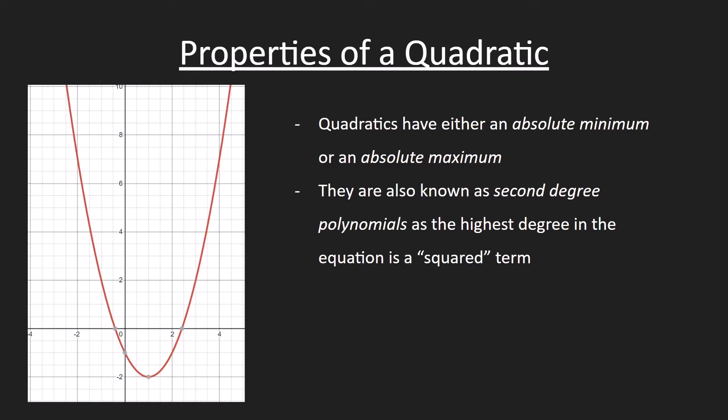Quadratics are also known as second degree polynomials, as the highest degree in the equation is a squared term from the x-squared. It's important to note that not all quadratics have zeros. They may have 1, 2, or even no zeros at all.